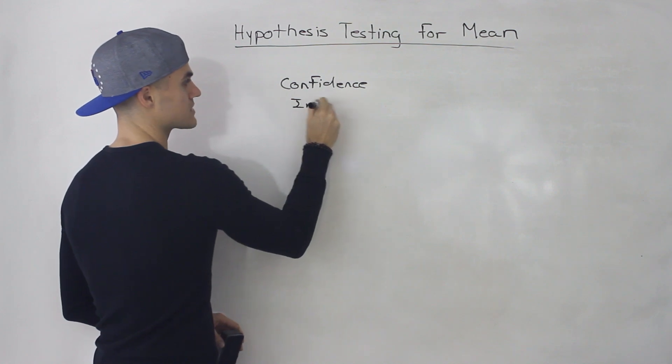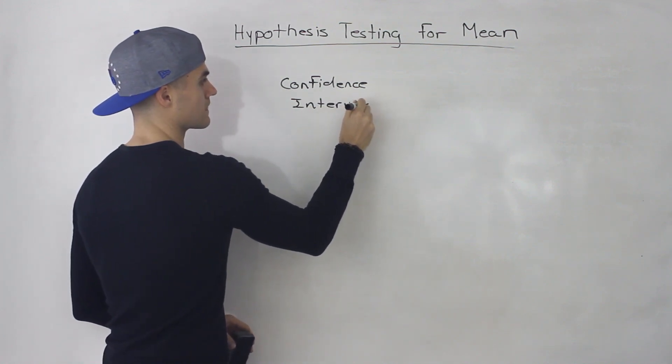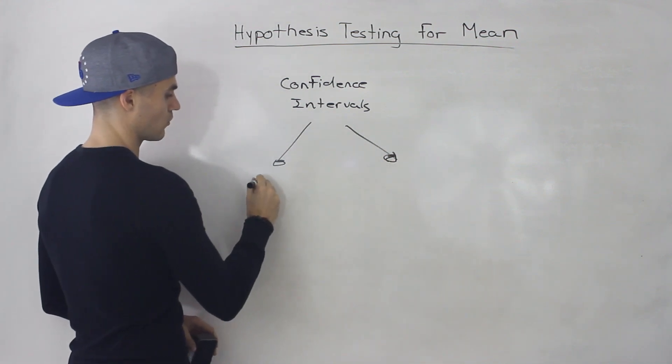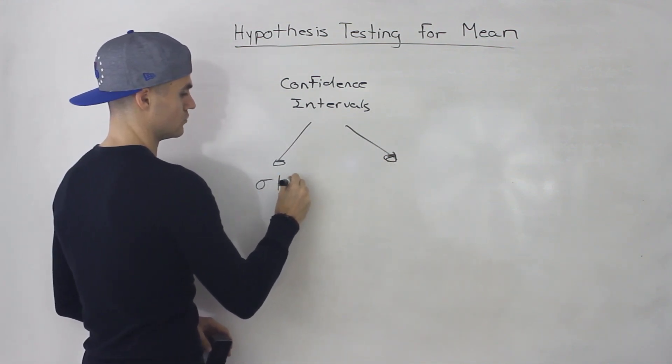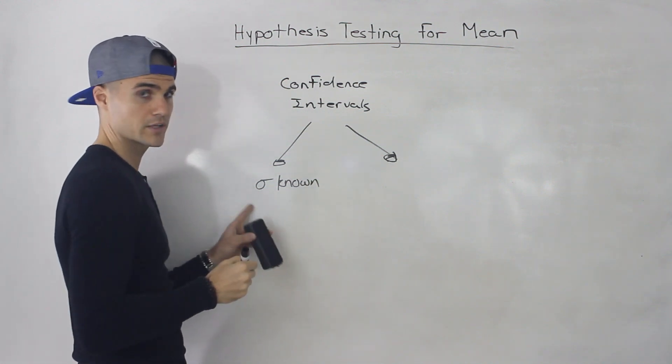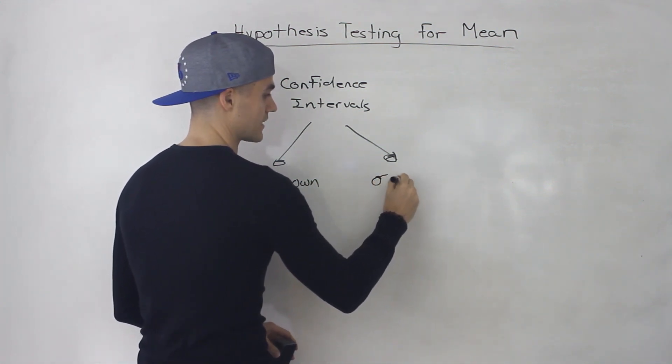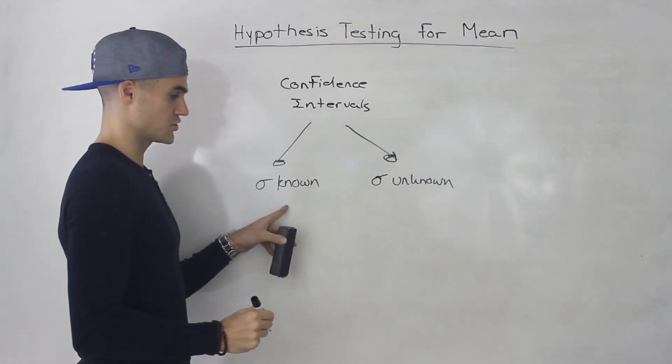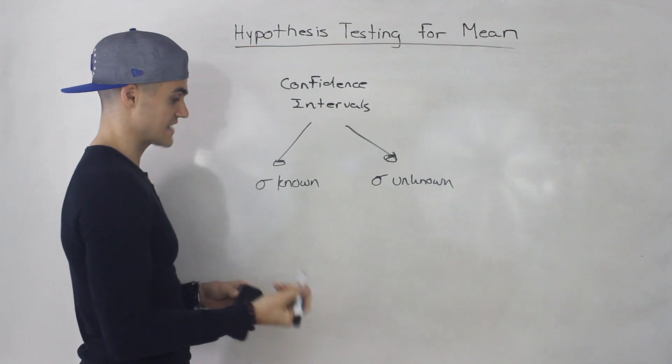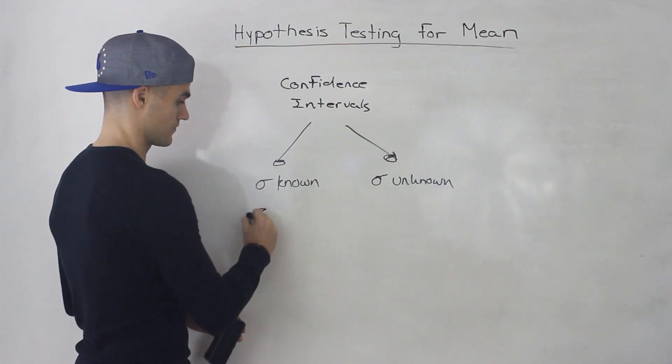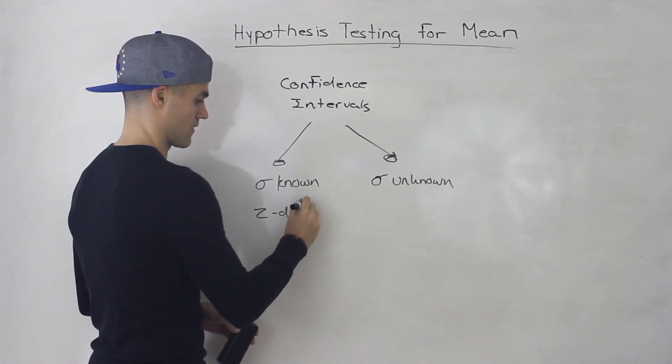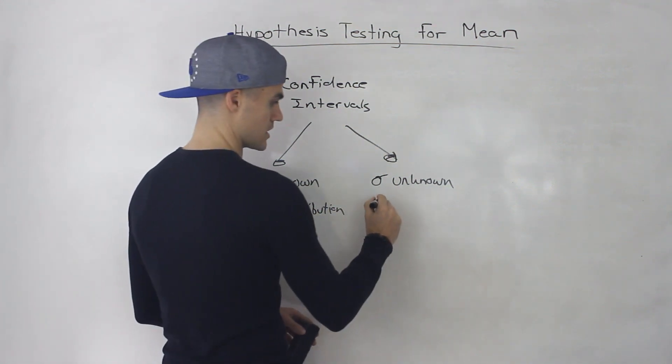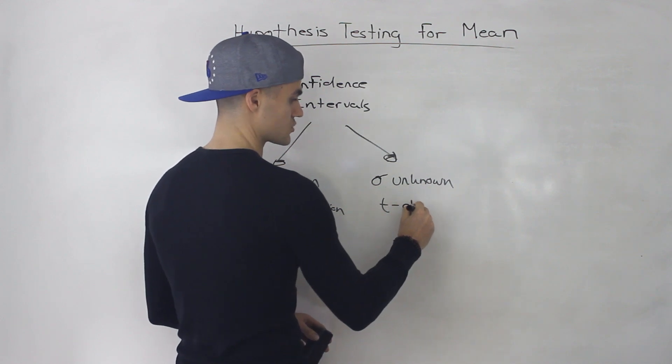So when we had confidence intervals, remember we are looking for two things. We are looking for whether we knew the population standard deviation or whether we didn't. And if we knew the population standard deviation, then we use the Z distribution. And if we didn't know the population standard deviation, we use the T distribution.